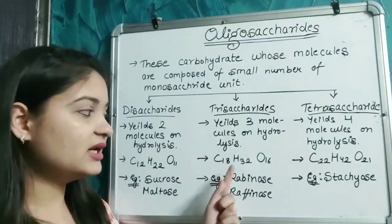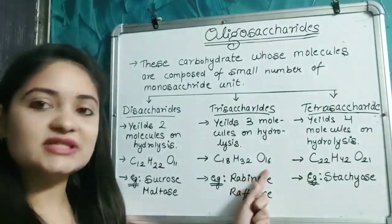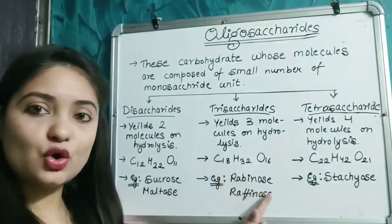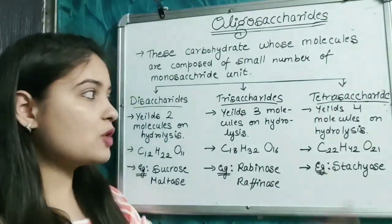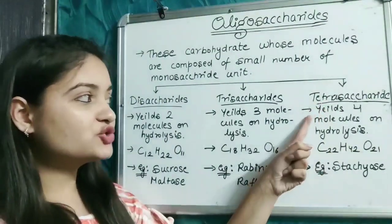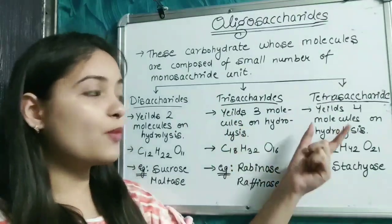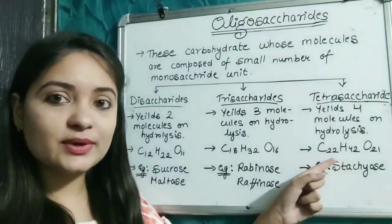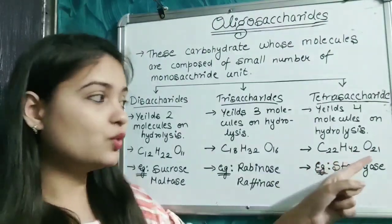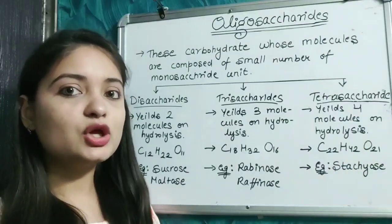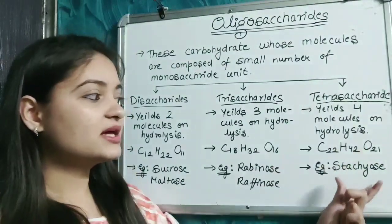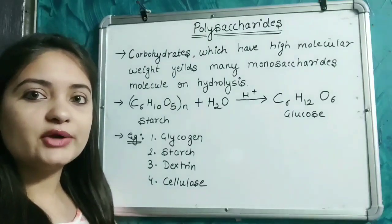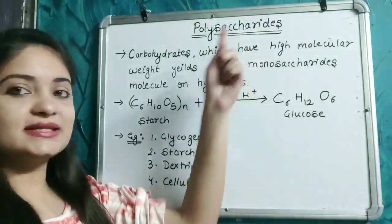Trisaccharides yield three molecules of monosaccharide units on hydrolysis; their molecular formula is C₁₈H₃₂O₁₆. Examples of trisaccharides include rabinose and raffinose. Tetrasaccharides yield four molecules of monosaccharide units on hydrolysis; their molecular formula is C₂₂H₄₂O₂₁. An example of a tetrasaccharide is stachyose.